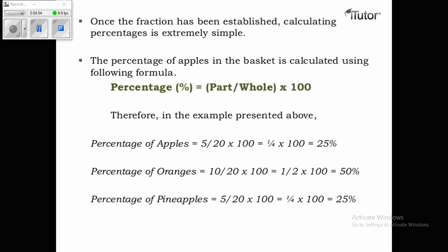Once the fraction has been established, calculating percentages is extremely simple. The formula is: Percentage = (Part ÷ Whole) × 100. Therefore: percentage of apples = (5 ÷ 20) × 100 = 25%; percentage of oranges = (10 ÷ 20) × 100 = 50%; percentage of pineapples = (5 ÷ 20) × 100 = 25%.